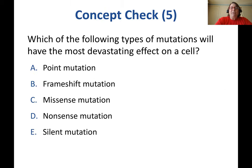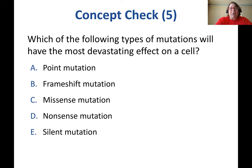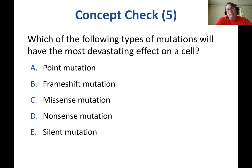Concept check: which type of mutation will have the most devastating effect on a cell? Point mutations, frame shift mutations, missense mutations, nonsense mutations, or silent mutations? Typically a nonsense mutation will have the biggest impact because it truncates the protein. However, a frame shift mutation messes up the protein from that point on, and a missense mutation can also be pretty devastating depending on where it occurs and what change happens to the protein.